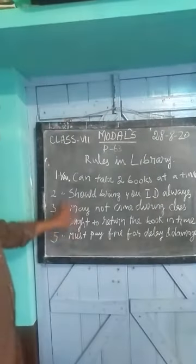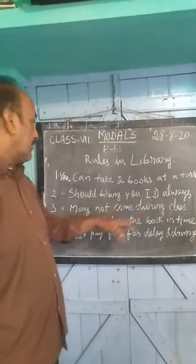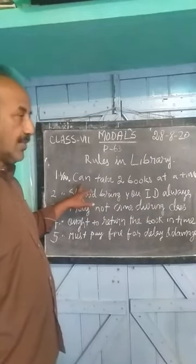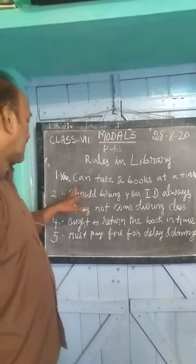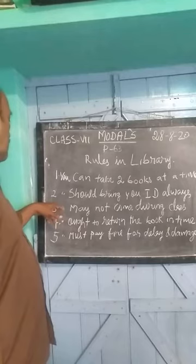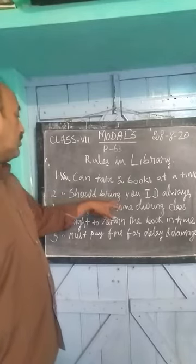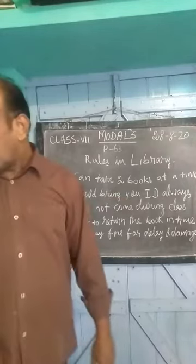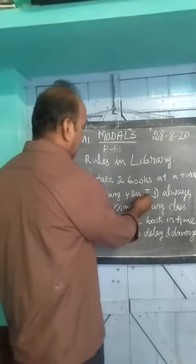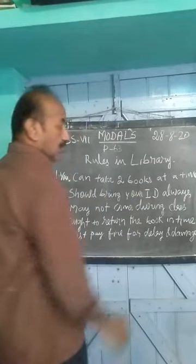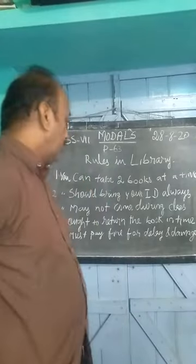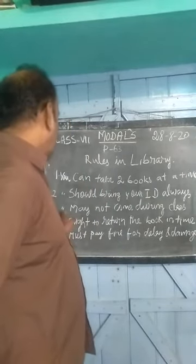First rule: 'You can take two books at a time.' 'Can' means you are able to — that is ability — and it can also mean permission. Second rule: 'You should bring your ID.' You should always bring your ID when you go to the library, as they ask for it. So don't forget — that is the rule.